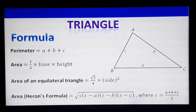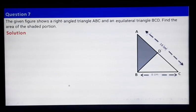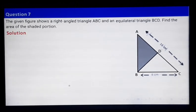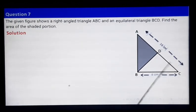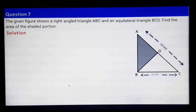Today we will see the continuation of the very same exercise, beginning with the seventh question. The question shows a right-angled triangle ABC and an equilateral triangle BCD. This white triangle BCD is the equilateral triangle. We have to find the area of the shaded portion.